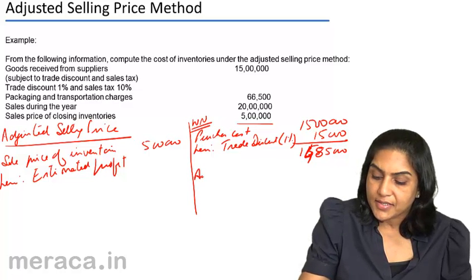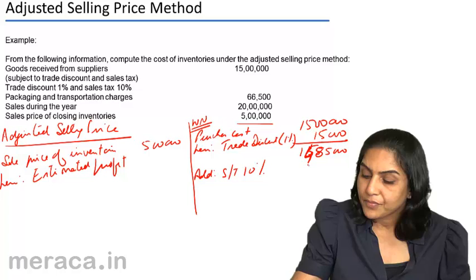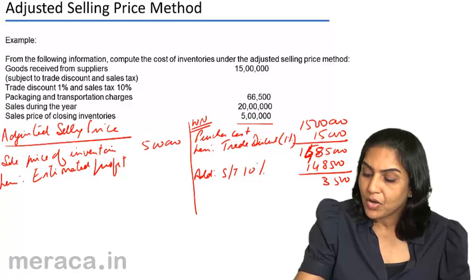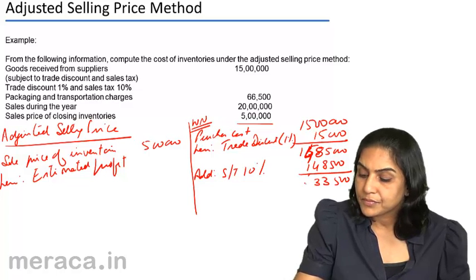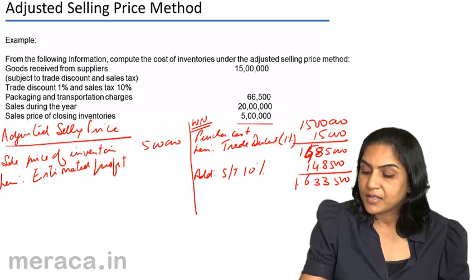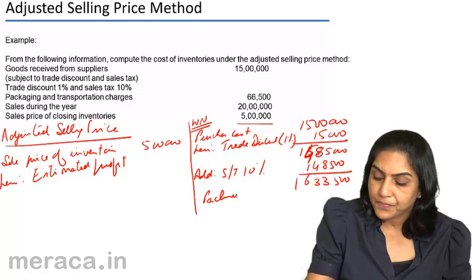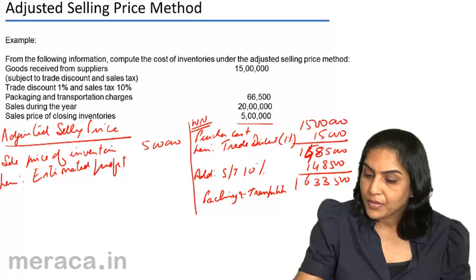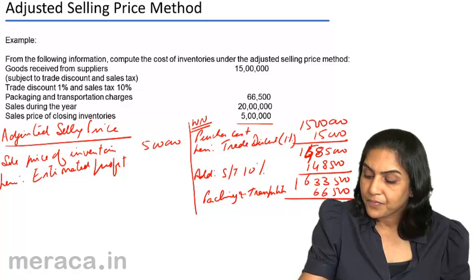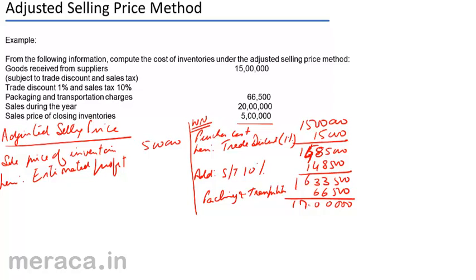Add sales tax of 10%, that is 1 lakh 48,500, giving us a total of 16 lakh 33,500. Add packing and transportation charges of 66,500. This gives us a total cost of purchases of 17 lakhs.